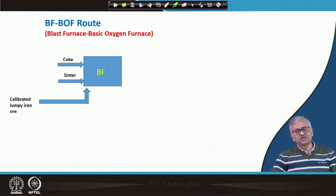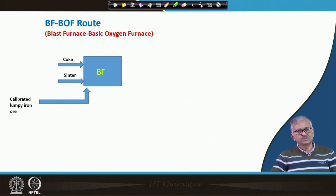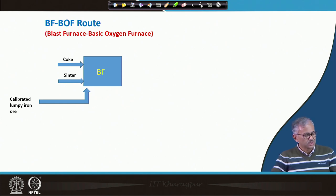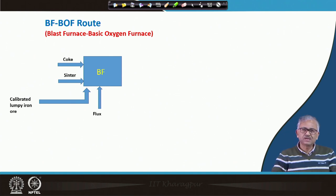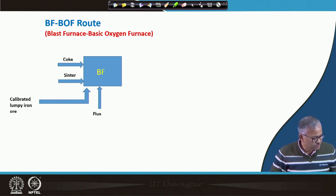Run-of-mine ore means lumpy ore from the mines calibrated in size, such as 40 millimeter ore. Lumpy iron ore, sinter, and coke are all feeds to the blast furnace. Some flux must also be added because the gangue is removed in the form of slag, so flux is required to enable slag-metal separation.